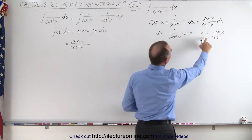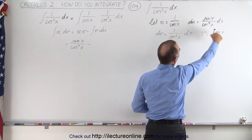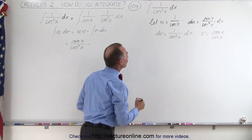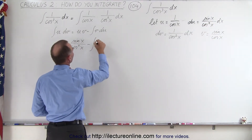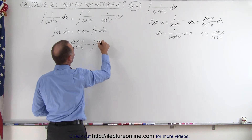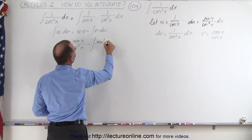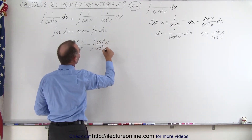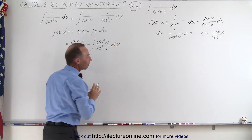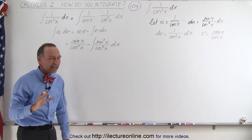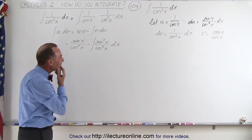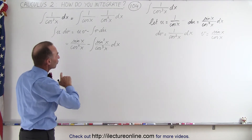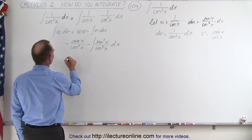We have sine of x divided by the cosine square of x minus the integral of v du. Now v is the tangent and du has a sine over cosine square term, so that gives us sine square divided by the cosine cube — that's the integral of sine square of x divided by the cosine cube of x dx. Now it looks like we haven't gotten any farther with this, but if we write the numerator as 1 minus the cosine square, we get the following.